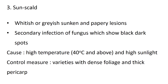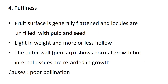Sunscald: whitish or grayish, sunken and papery lesions develop on fruits. These lesions may develop secondary infections of fungus, which show black dark spots. Cause is high temperature — 40 degrees Celsius and above — and high sunlight. Control measure is use of varieties with dense foliage and thick pericarp.